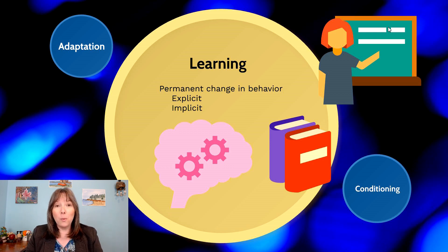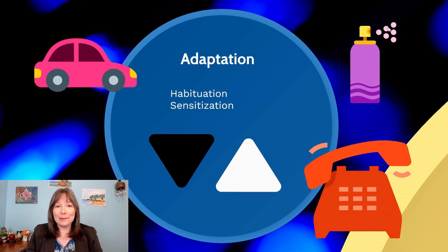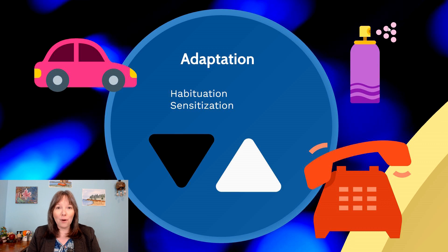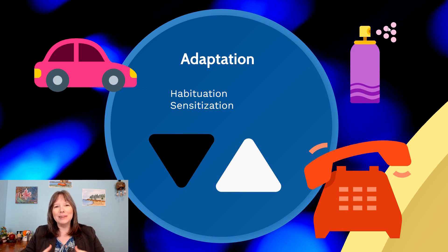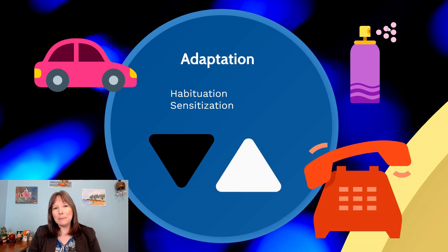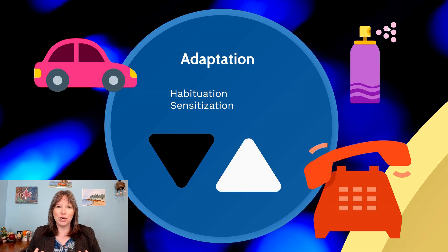Let's drill down a bit more on what we mean by learning. We talked in a prior unit about sensory adaptation — how we may become more sensitive or less sensitive to things in the environment around us. This adaptation can take two forms. The first is habituation: when you become less sensitized, or desensitized, to something over time. We tend to become habituated to things we find are not dangerous, not informative, and not interesting.